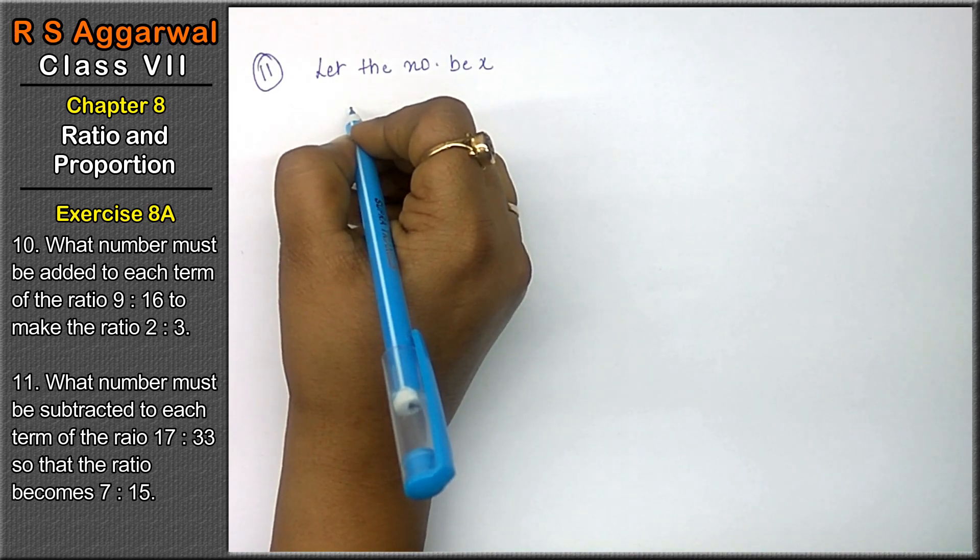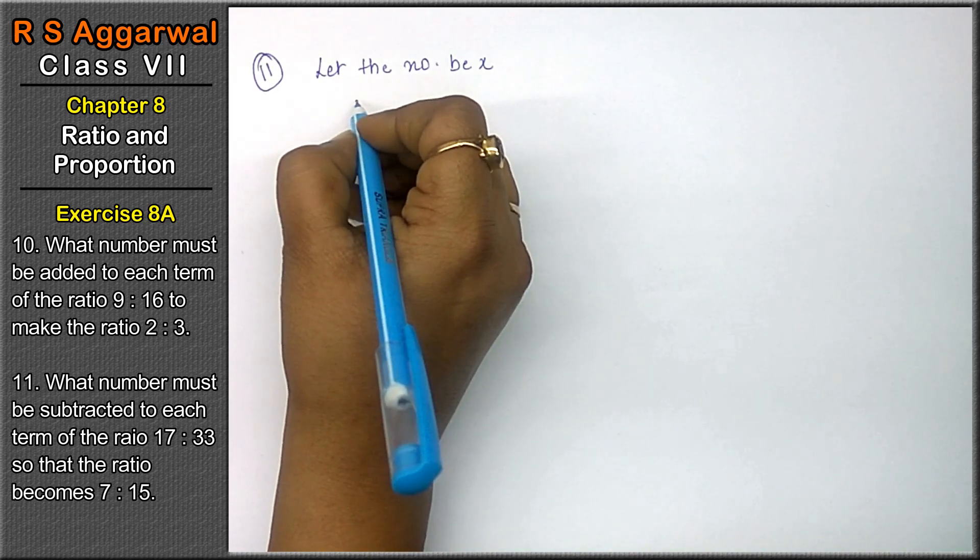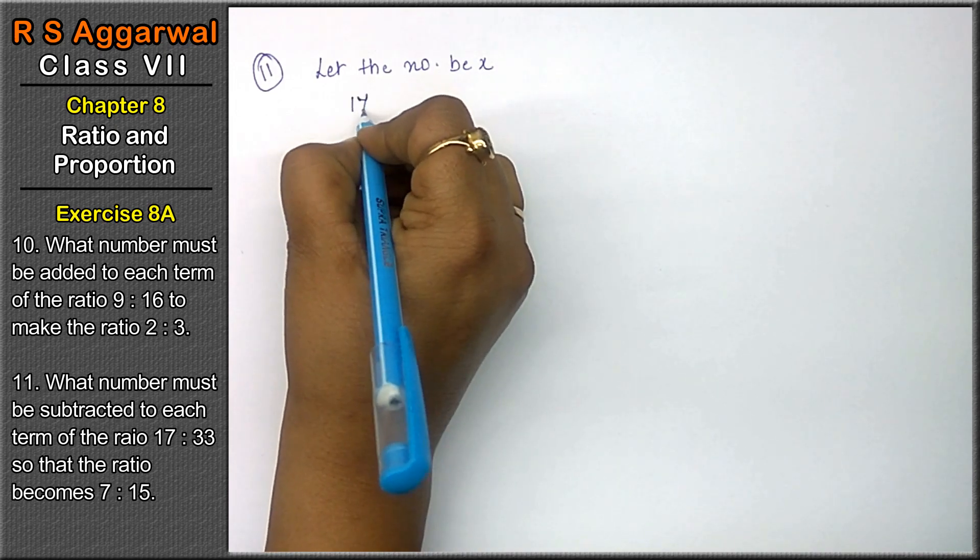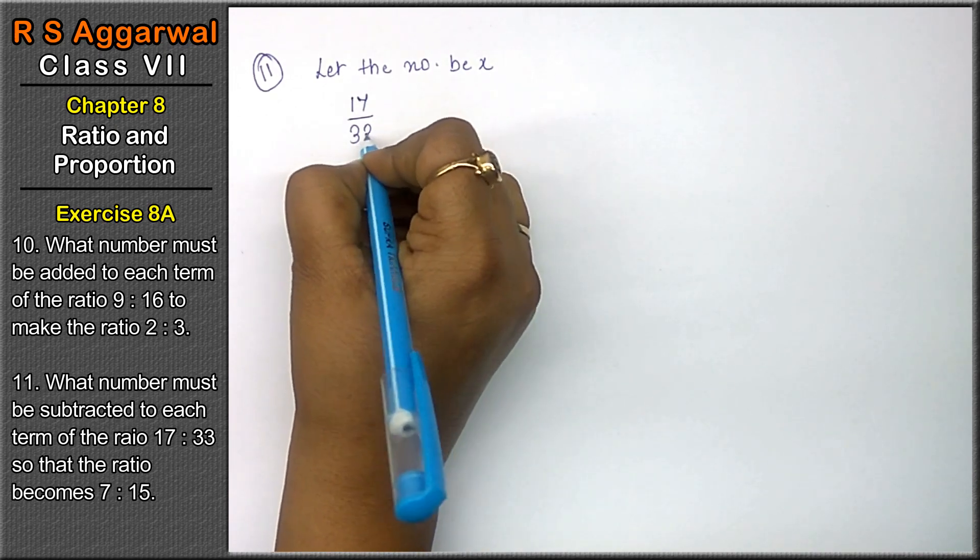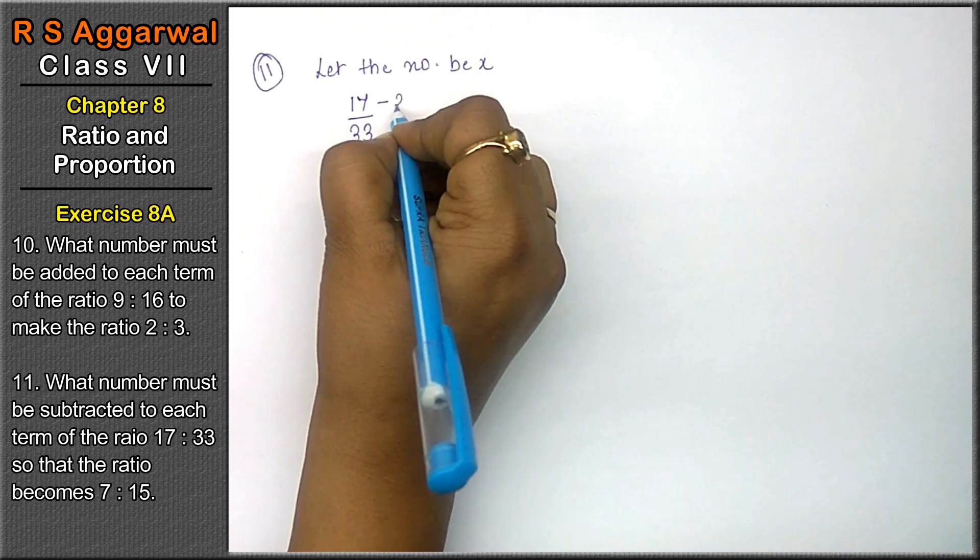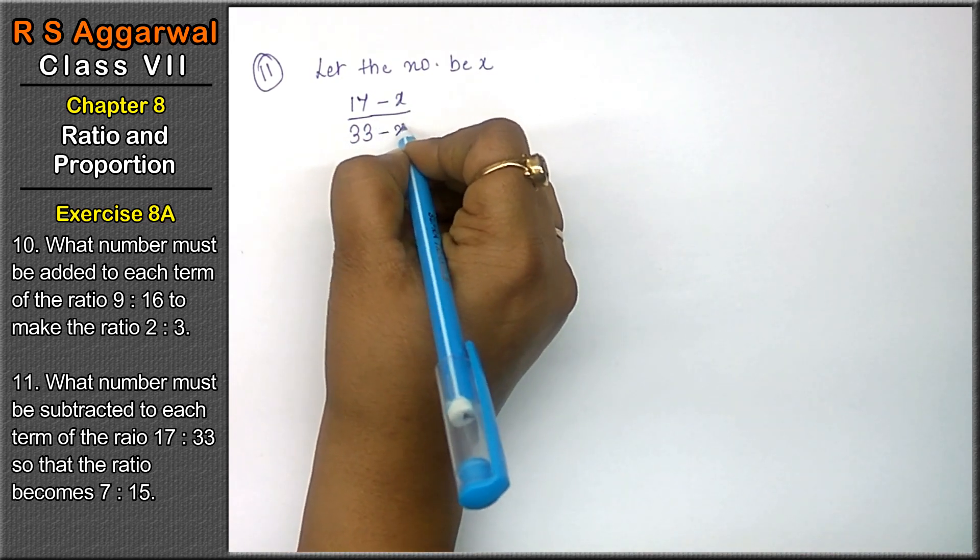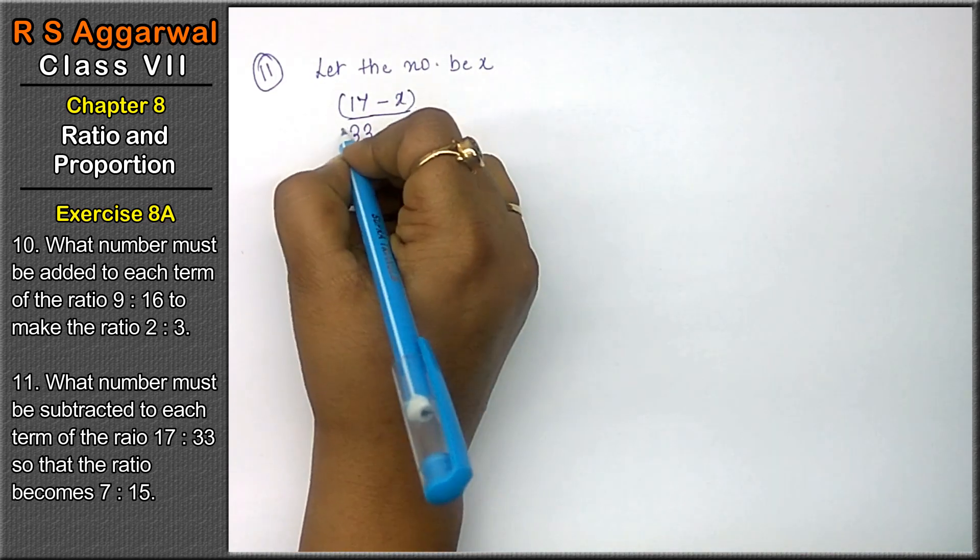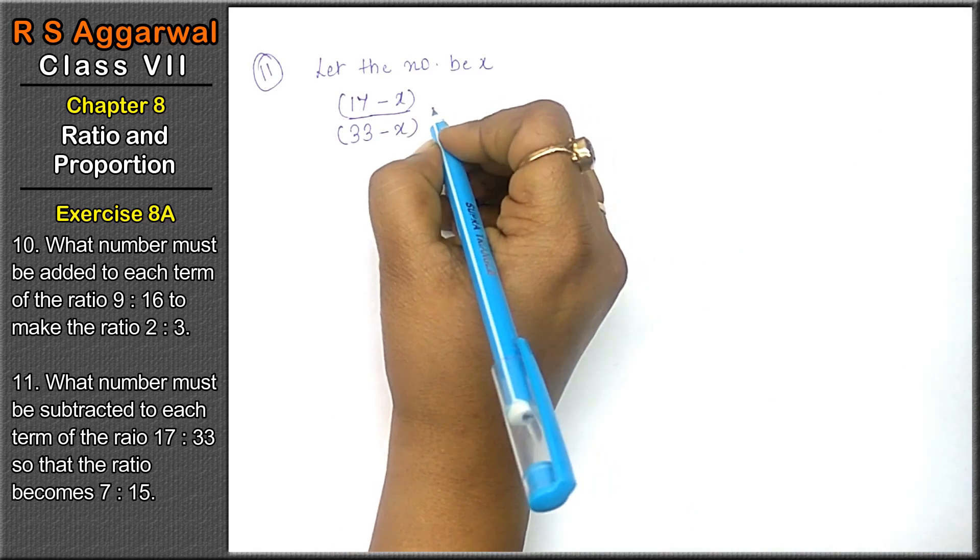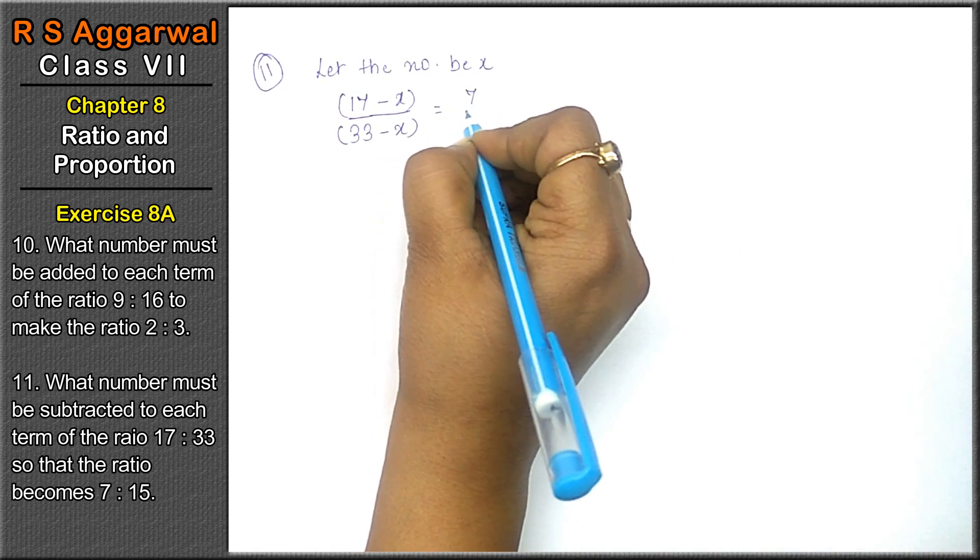What number must be subtracted from each term of the ratio 17 upon 33? Which number should be subtracted? x is subtracted from both numbers so that the ratio is 7 upon 15.